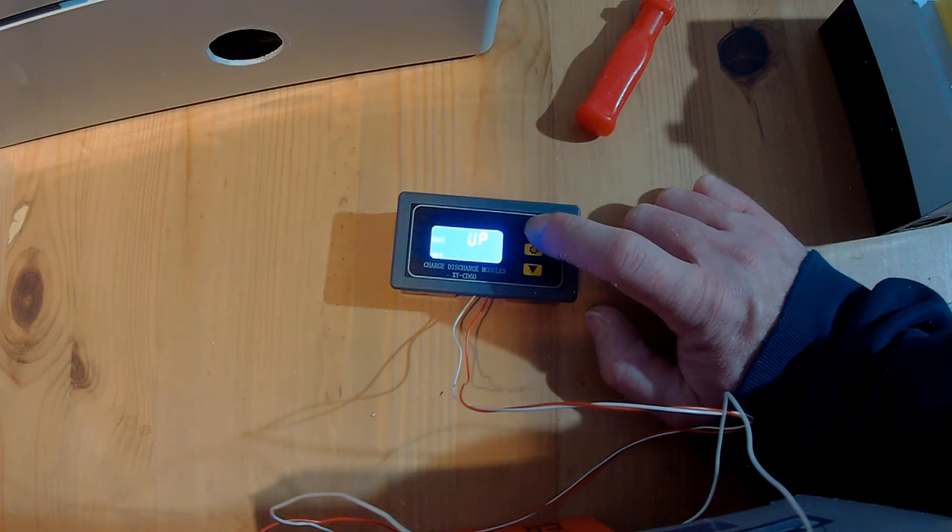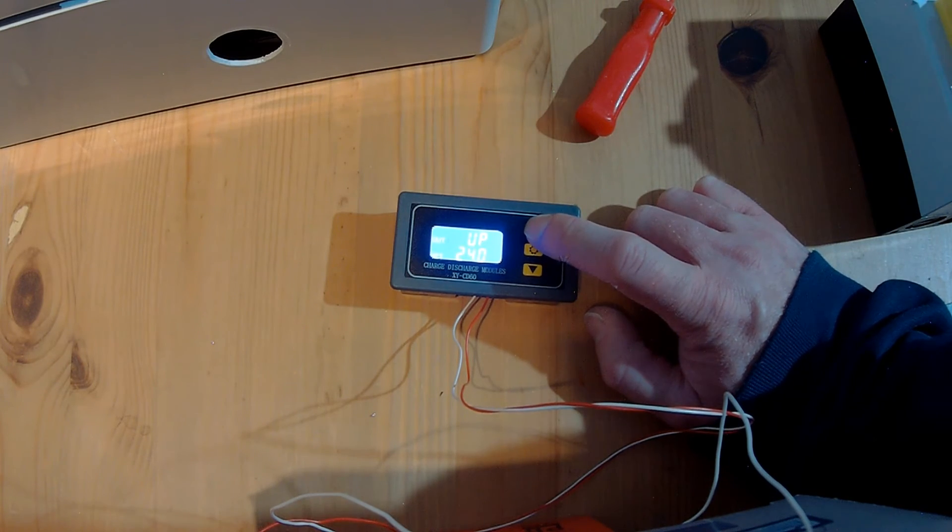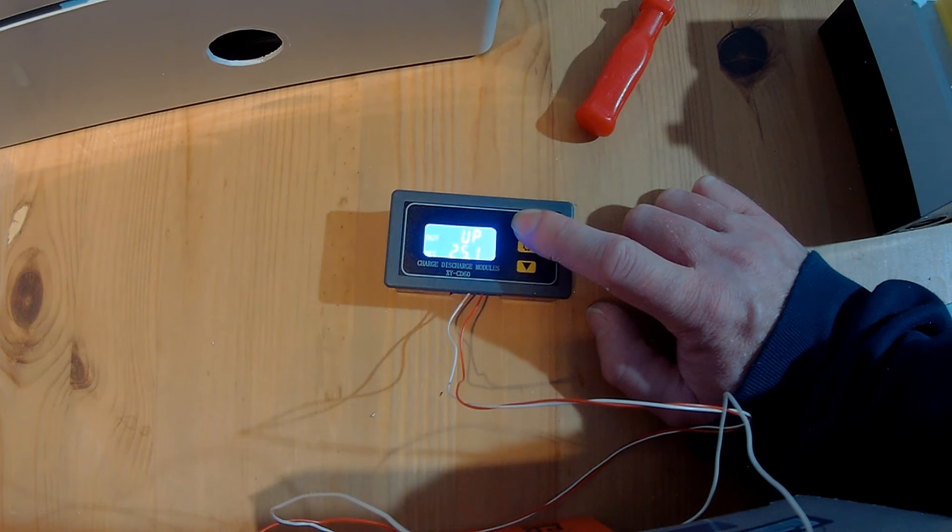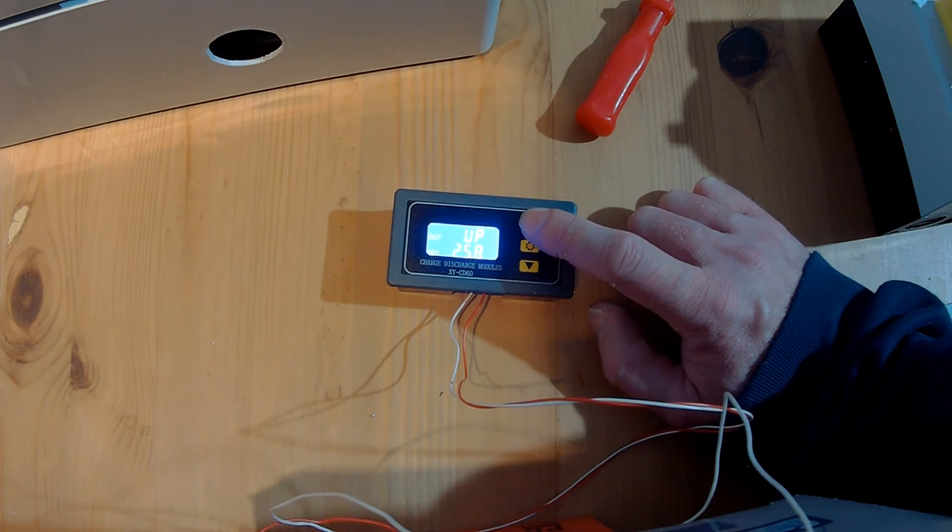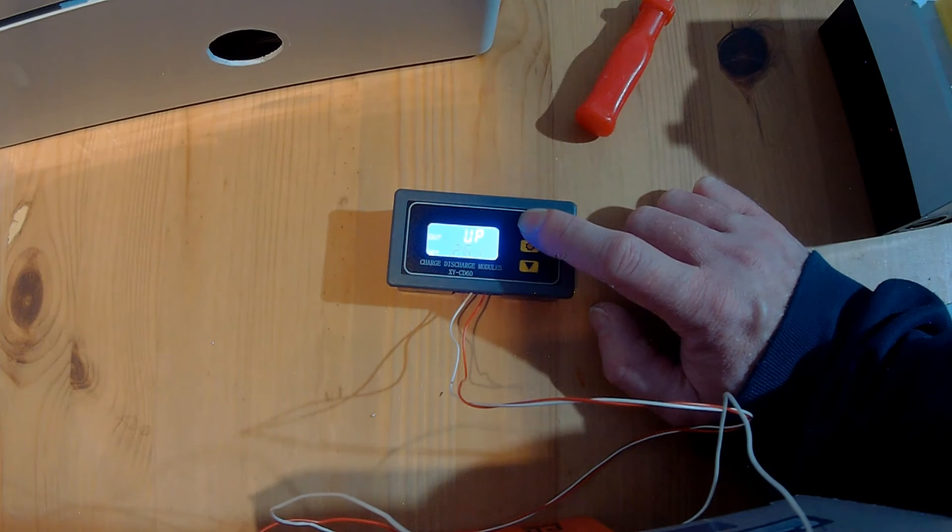So for a 24-volt system, for example, I would set the up probably at 28.9, 29 volts for lithium-ion phosphate batteries. And the down at 28.5 for example.